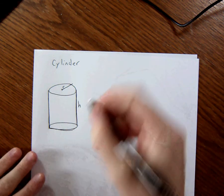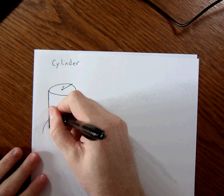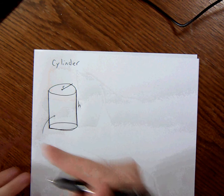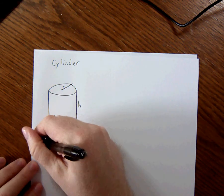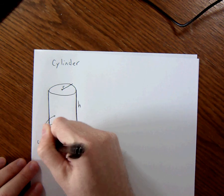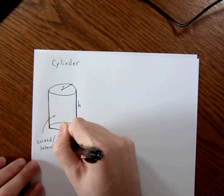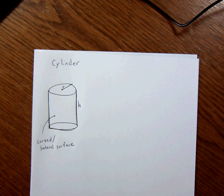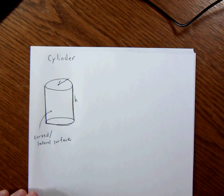And I want you to, we're going to call this piece right here, the middle tube part. That is the curved slash lateral surface. So if I say curved surface, you know what I'm talking about, or if I say lateral surface, you know what I'm talking about, because there's a good chance I'll say both.